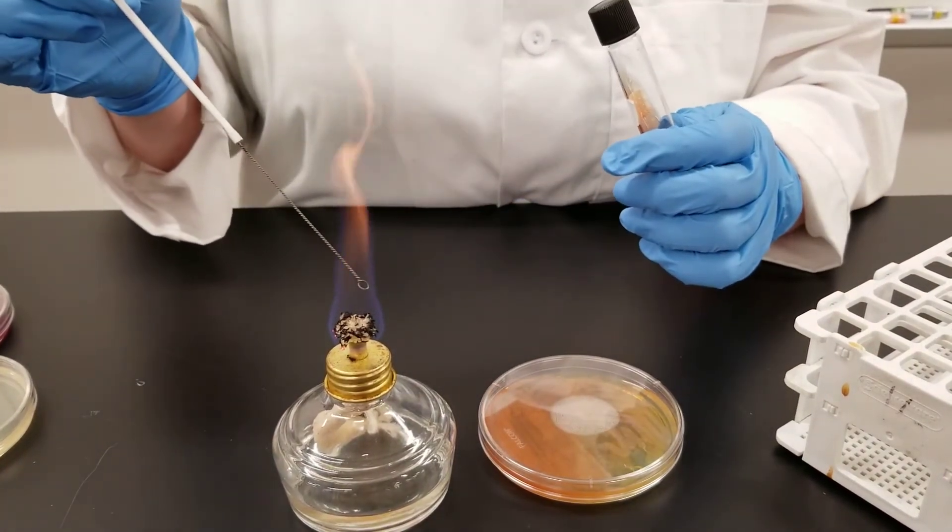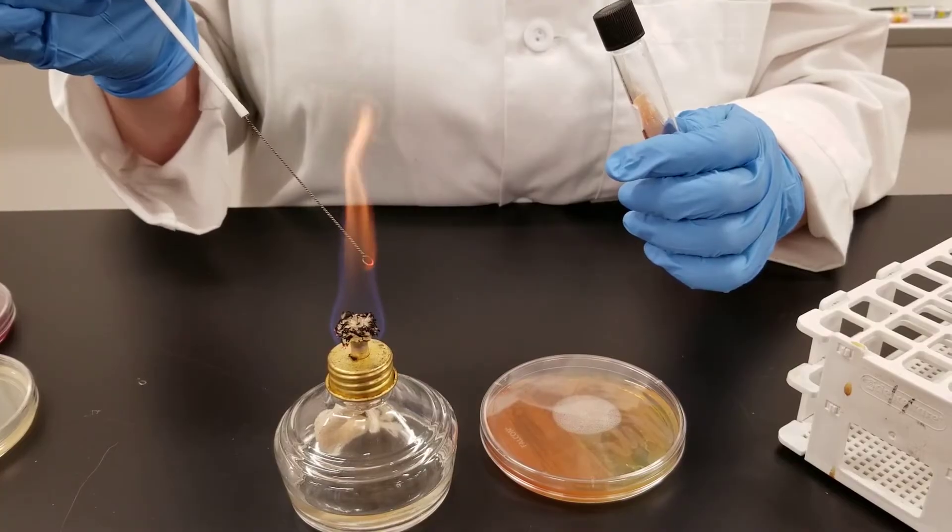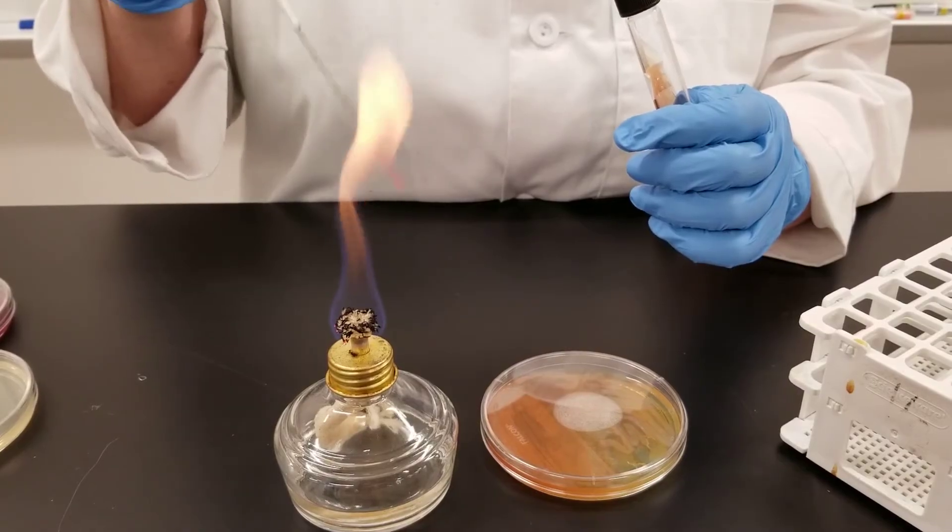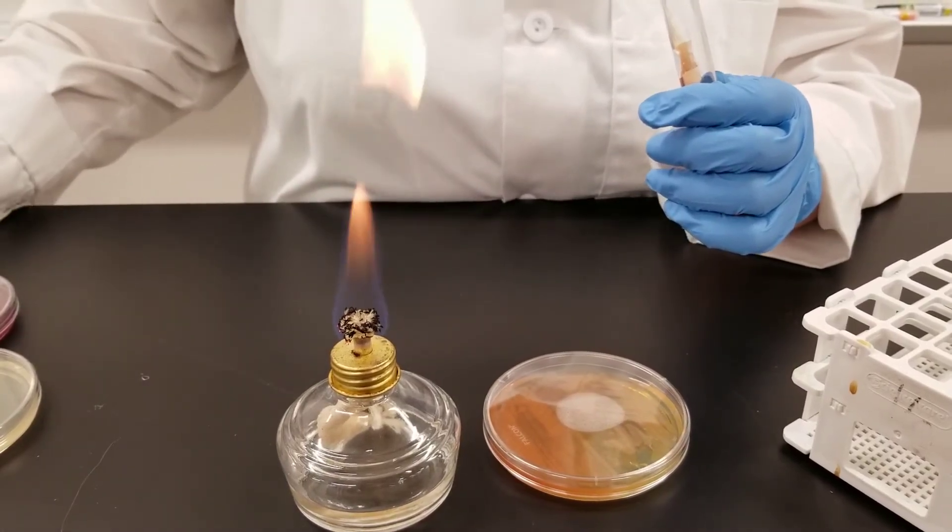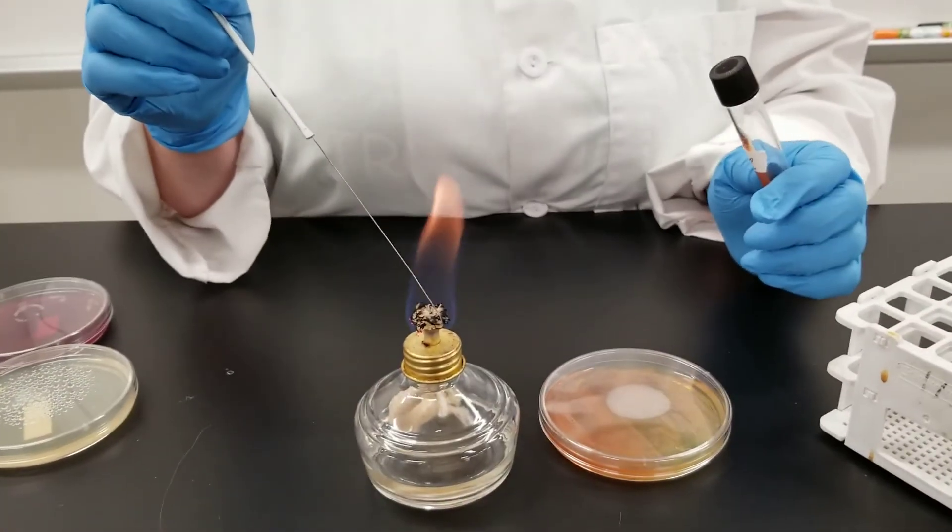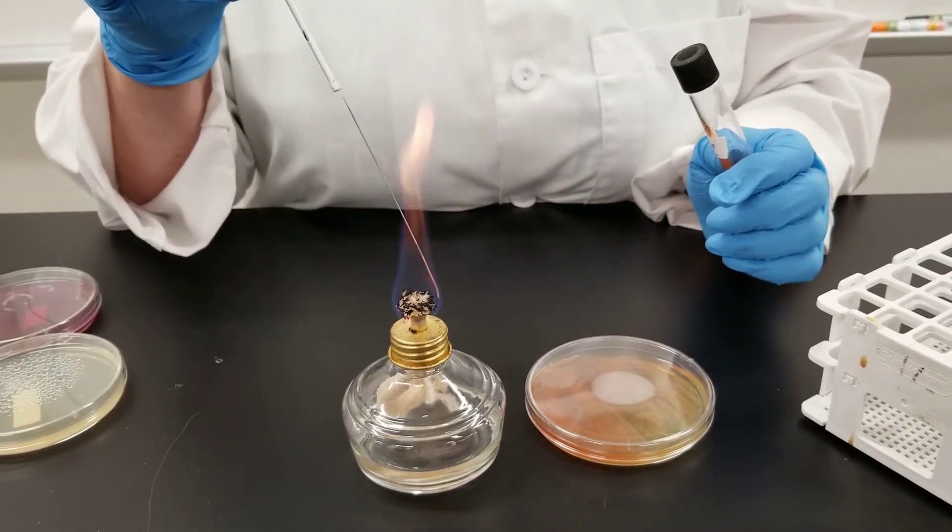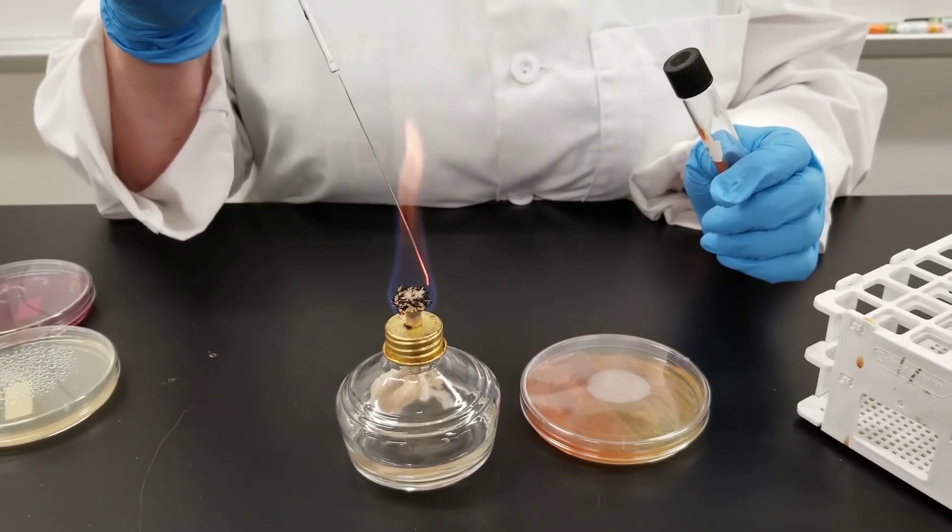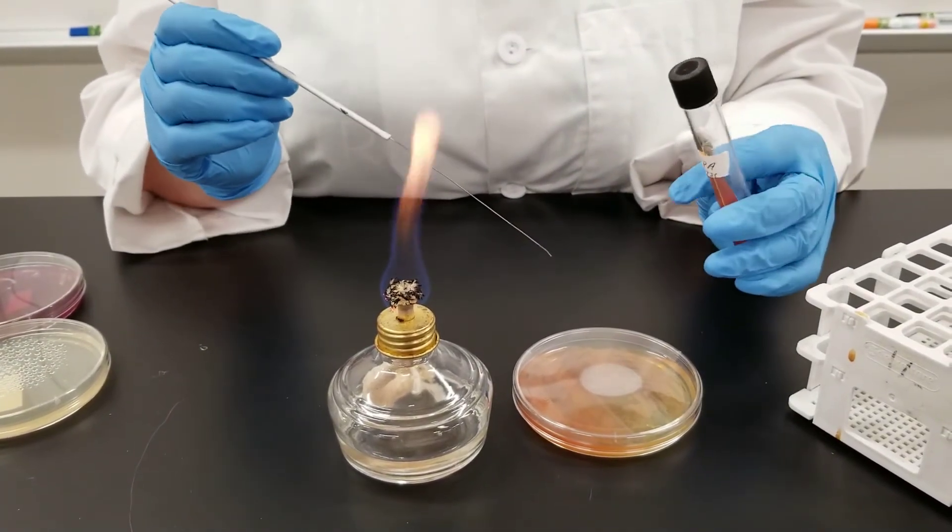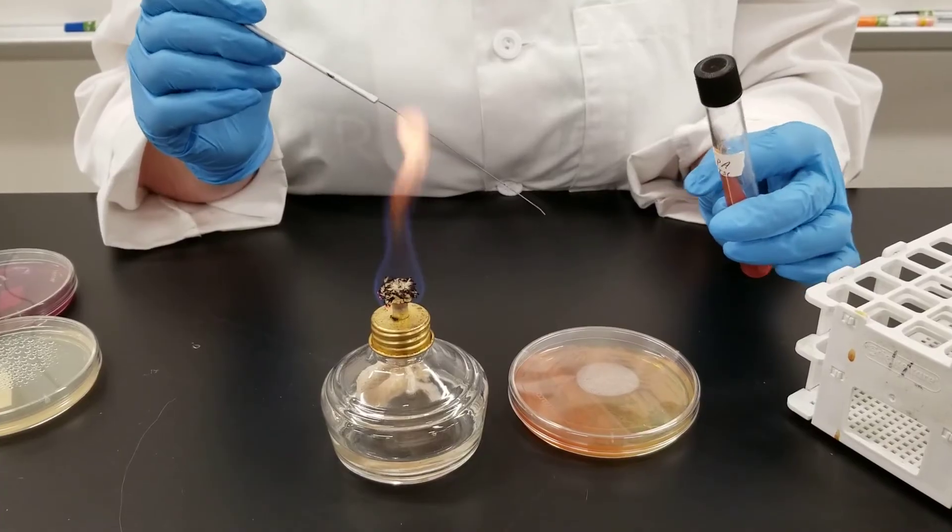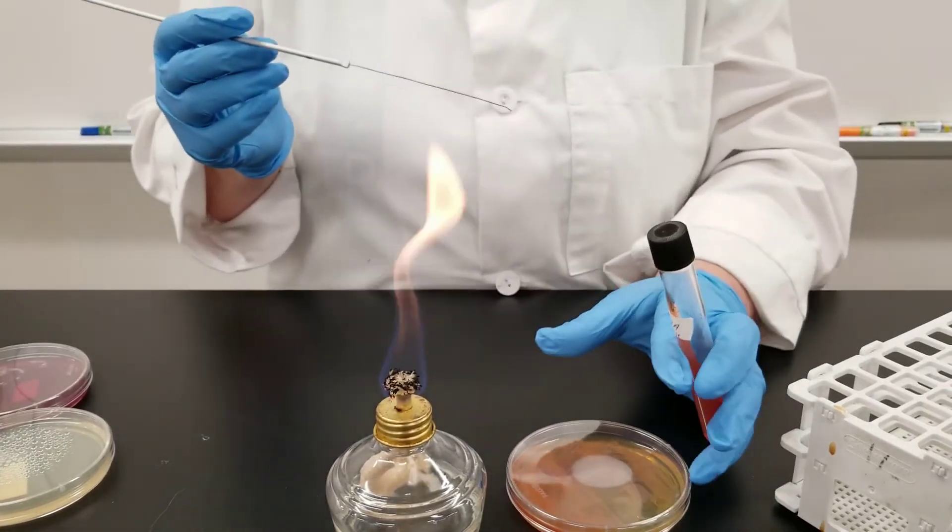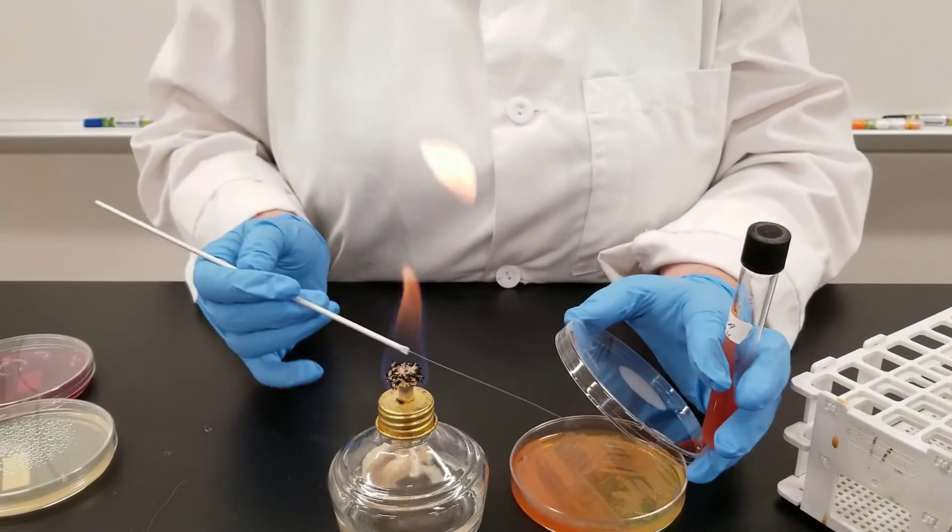Flame your loop. Now we're going to do something a little bit different. Make sure this loop is flamed. We are done with the loop for right now. Now we are going to use the straight needle. You flame it just like you would your loop. When this cools off, what we're going to do is touch the colony again on our stock plate and this time we're going to do a stab down into the bottom part of the tube, which is referred to as the butt of the tube. So we are going to get our sample.